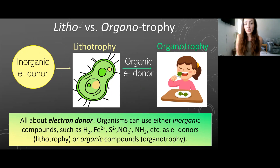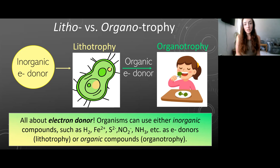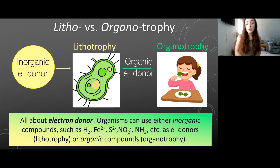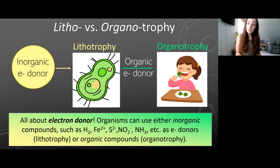Now we'll move on to litho and organotrophy. Litho versus organo just has to do with the electron donor. In metabolism, there's typically an electron donor and an electron acceptor to go through the metabolic process and make the energy we use to live. Examples of inorganic electron donors — which would be lithotrophy — are things like hydrogen, ferrous iron, reduced sulfur, nitrite, ammonia, and plenty more. Examples of organic electron donors would be like glucose or glucose derivatives, or anything we get from other organisms that we can convert in our body to make electron donors. So lithotrophy is inorganic, and organotrophy is organic.